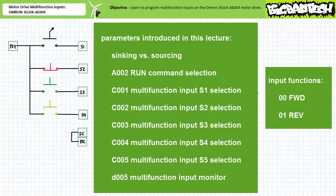In conclusion, we installed external remote input devices and learned to program the OMRON 3G3JX AE004 motor drive to recognize and respond to these remote inputs. We changed the drive from sinking to sourcing input format, examined 00 forward and 01 reverse functions in detail, and discussed the proper sequence to hand off control to these remote inputs. Long story short: don't hand off control to the multifunction inputs until you first assign them the proper functions. Any shortcuts in this process could have disastrous consequences, given an input might have a pre-assigned default function incompatible with the present configuration and application. Finally, we learned to monitor the logical status of remote input devices using the multifunction input monitor function.